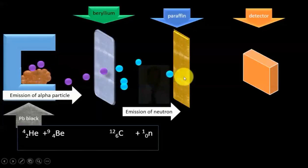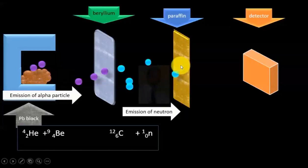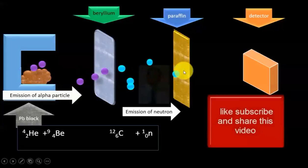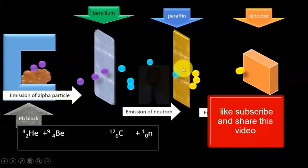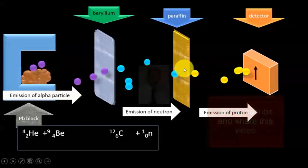These neutrons went on to hit the paraffin material which is rich in protons. Since neutron and proton are of comparable mass, it was possible that this neutron could eject protons from paraffin material which is highly rich in protons.